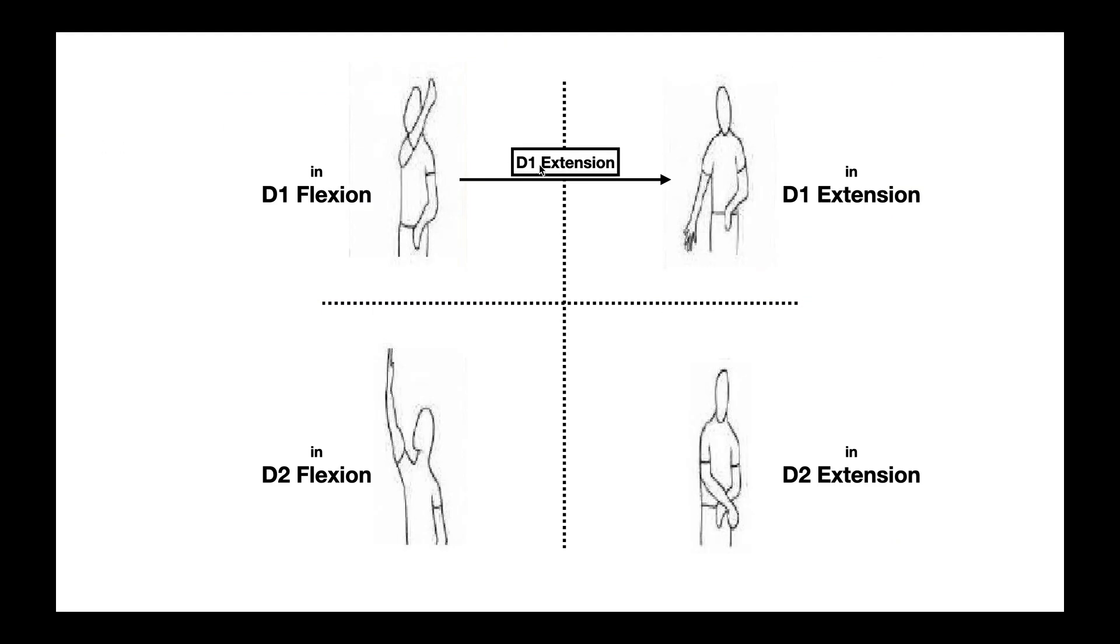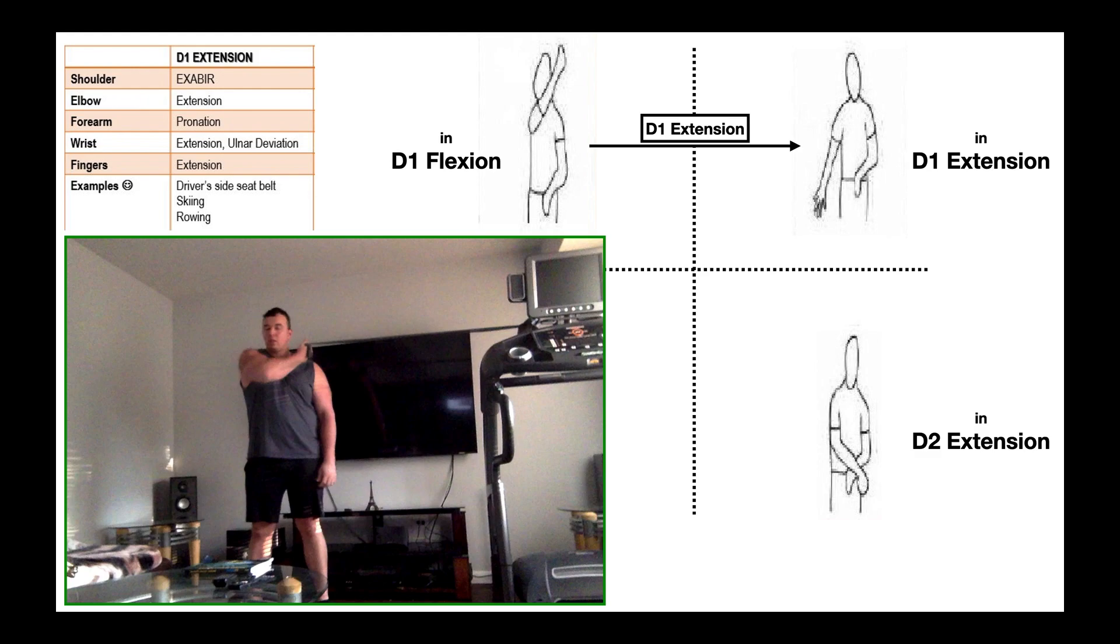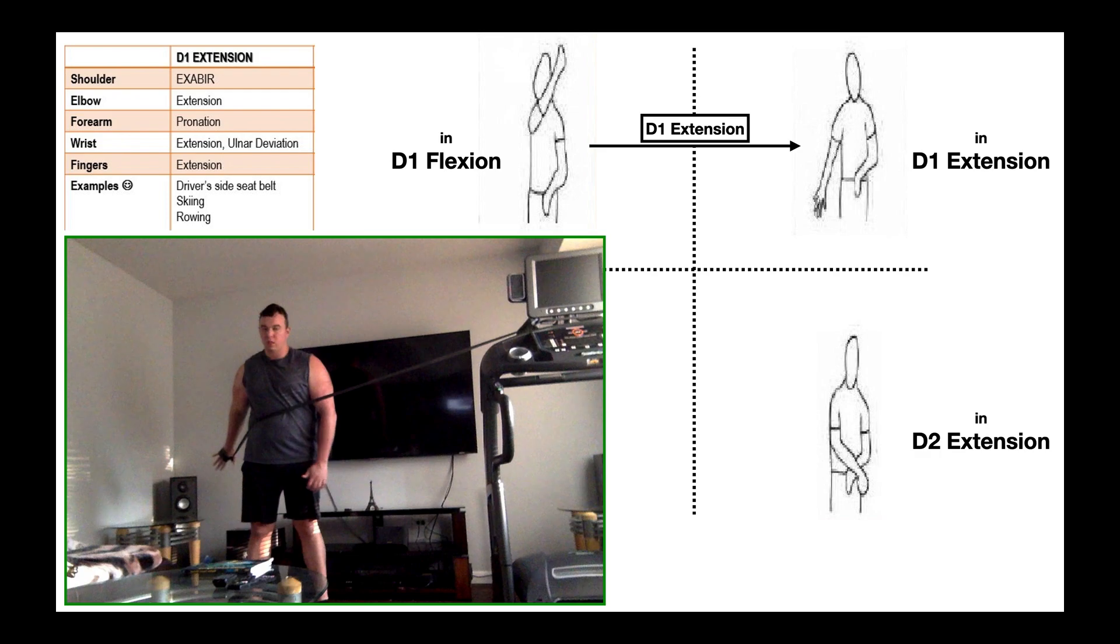Now obviously, D1 extension then would be moving from the D1 flexed position into the D1 extended position. So what I'm about to show you will be resisted D1 extension. I'm going to begin in a D1 flexed position and move to a D1 extended position. And you'll notice all these movements over here are going to be exactly opposite that of D1 flexion. So the shoulder is going to obviously extend going down, also abduct and internally rotate. The elbow extends of course, and the forearm pronates. We should also see the wrist extend and ulnar deviate, and then the fingers are also going to extend. Again, if you're holding a weight or a theraband, it might be difficult to see that finger extension because you do have to hold on to the object to some extent. But in terms of those movements for D1 extension, they are exactly equal and opposite to that of D1 flexion.